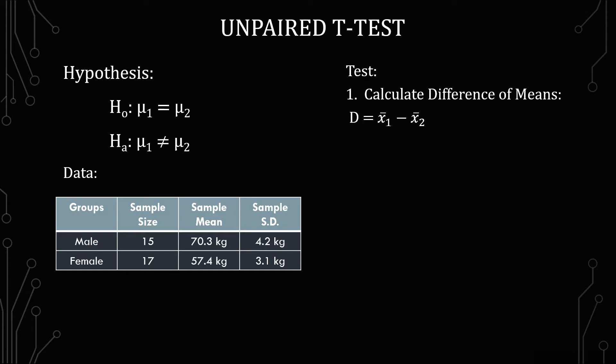The first part of this test is to calculate the difference of the means. So we have x-bar 1 minus x-bar 2 which is 70.3 minus 57.4 to give us 12.9 kilograms.